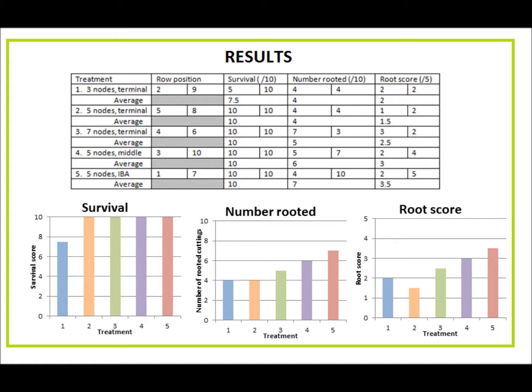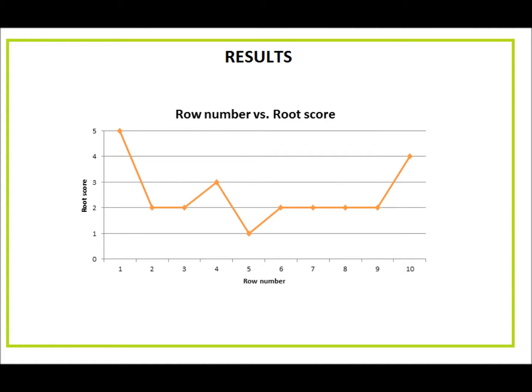Three-node terminal cuttings, treatment one, had a lower survival than other treatments, and this was because they rotted due to their small size. There was a trend where cuttings in the first and last row, regardless of the treatment, had a greater root score. This could be because the higher plant density in the middle of the tray reduced root length and density.